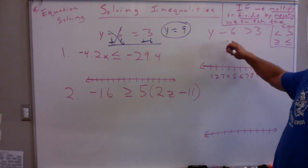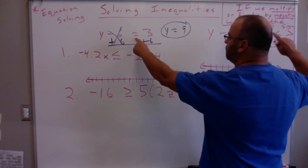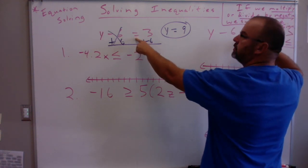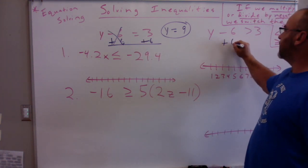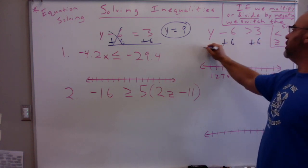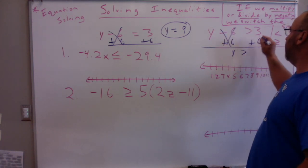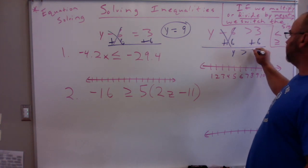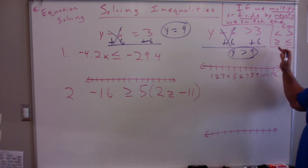What if we have y minus 6 is greater than 3? Notice, the only thing that's changed is we went from equal sign to greater than sign. So we're going to do the same thing. We're going to add 6 to both sides of the equation. This goes away. So y is greater than 3 plus 6, which is 9. Now, notice we didn't multiply or divide anything, so we just keep the sign the same.